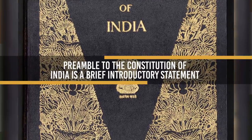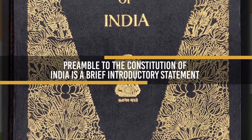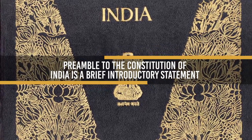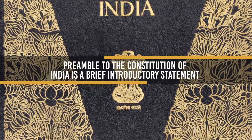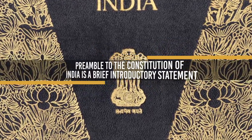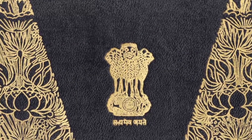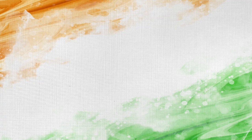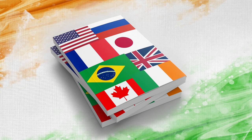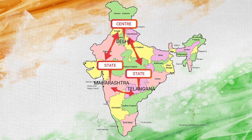The Preamble to the Constitution of India is a brief introductory statement that sets out the guiding purposes, principles and philosophy of the Indian Constitution. The Preamble gives the idea of the following: the source of the Constitution, the nature of the Indian state, a statement of its objectives, and the date of its adoption.